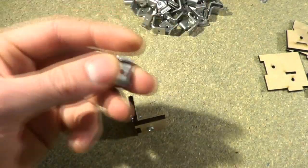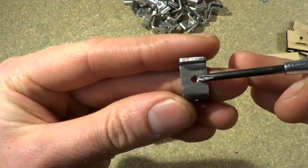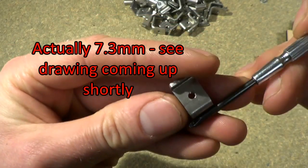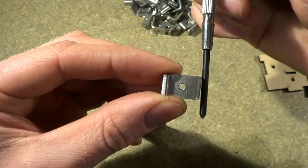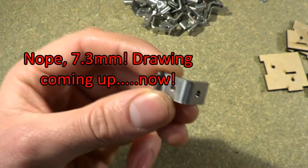The dimensions, as far as I can tell, are the threaded hole is 7.5mm in from the inner face of the box, so from that edge there to there is 7.5mm.